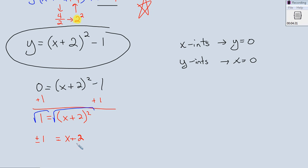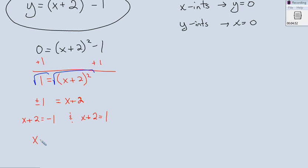All right, at this point now, that means I have two situations. I have x plus 2 equals negative 1, and I have x plus 2 equals positive 1. So I solve both of those. I find out here that x equals negative 3, and I find out right here that x equals negative 1. All right, so those are my x-intercepts.